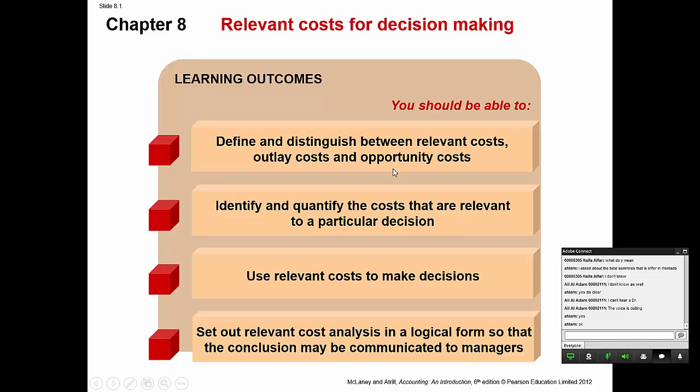Today we will have two chapters. The first chapter is chapter 8, and chapter 8 is related to relevant costs for decision making. This chapter and the next chapter are very important chapters, and most of the time there are some questions related to these chapters that come in the final exam.